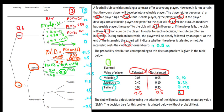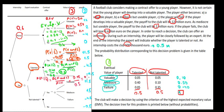And one more: the probability of being a failure given that the player is talented is the probability of being a failure and talented divided by the probability of being talented. Failure and talented has a probability of 0.05, divided by the probability of talented which is 0.5, and that's going to be equal to 0.10.